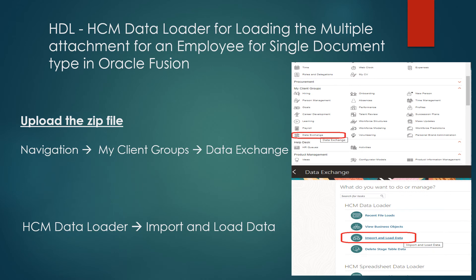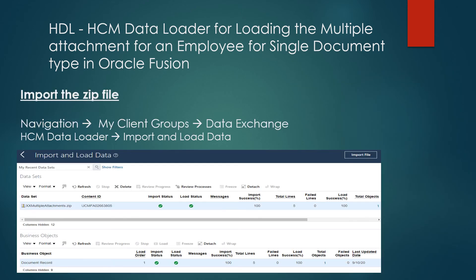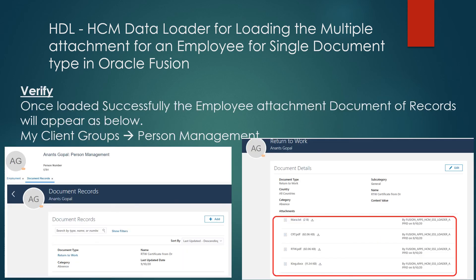Now let's try to upload those attachments. To upload those attachments we need to go to the HDL process. The navigation to go to the HDL data process is: My Client Groups, then Data Exchange. Once you reach there, you can see Import and Load Data. Once you click on Import Data, you can see an icon on the top — Import File. Click on this Import File, attach the zip file which we have compressed, and once it has successfully loaded the status will be changed to green.